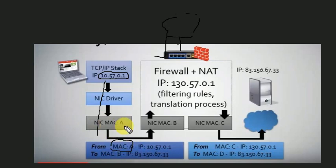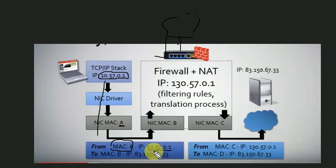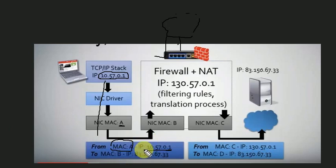For example, my system has MAC address A. My system has IP 10.57.0.1. So my source IP is 10.57.0.1. My destination IP is Google.com, which is 8.8.8.8. So in the packet header, we have source IP 10.57.0.1 and destination IP 8.8.8.8.